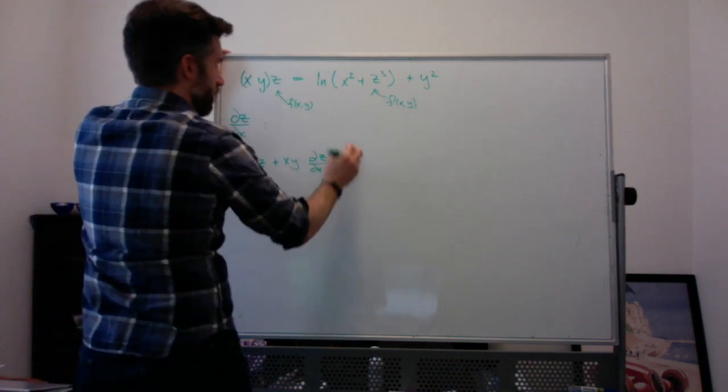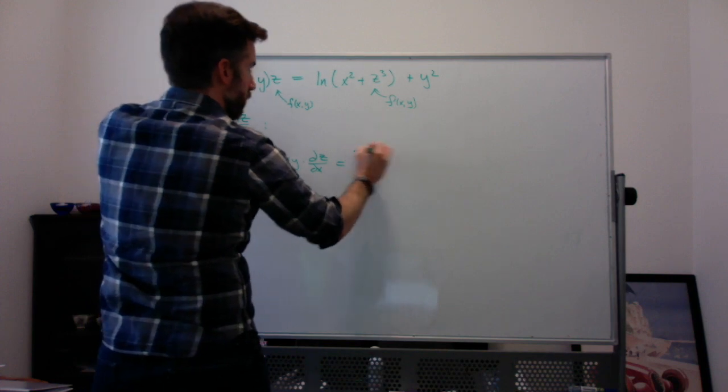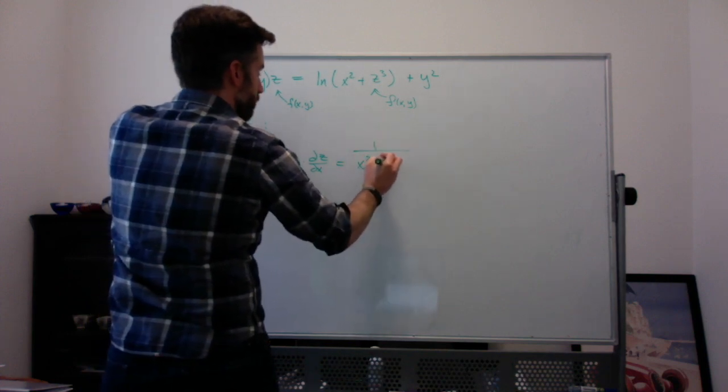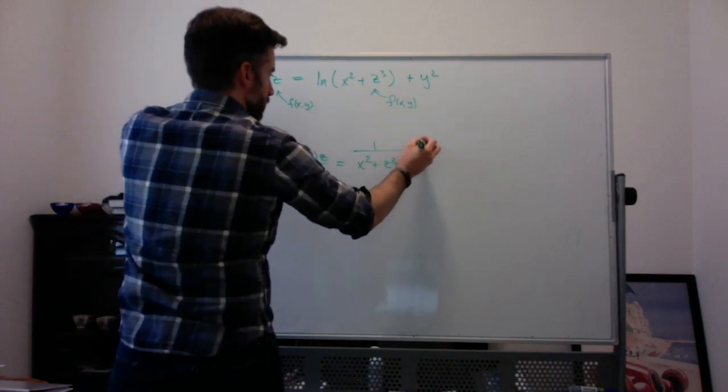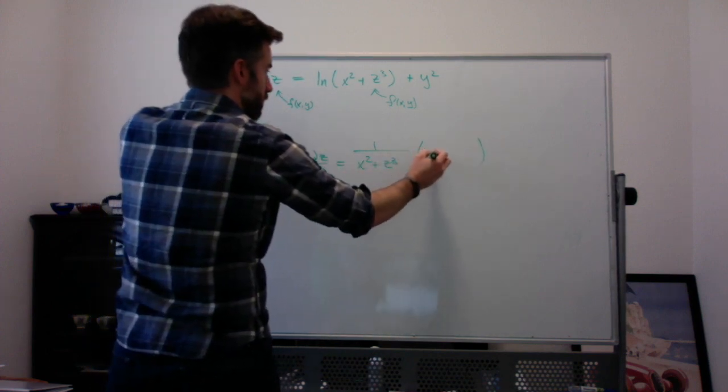On the right-hand side, the derivative of the natural log of some stuff is 1 over the stuff times the derivative of the stuff. The derivative of x squared is 2x.